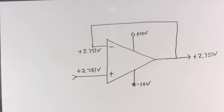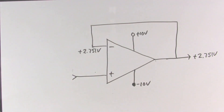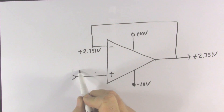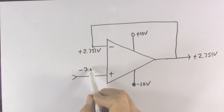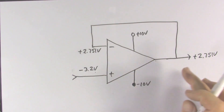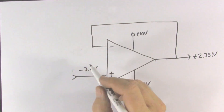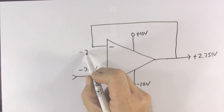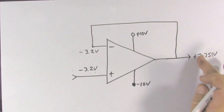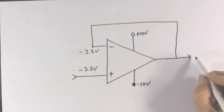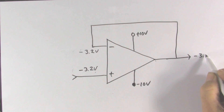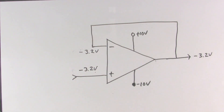And whatever happens to this input voltage, the output voltage is going to track it. So if this voltage drops down to minus 3.2 volts, the output voltage is going to change until this voltage equals minus 3.2 volts, which means the output voltage will equal minus 3.2 volts. So whatever voltage we put at the non-inverting input is the voltage we get at the output.